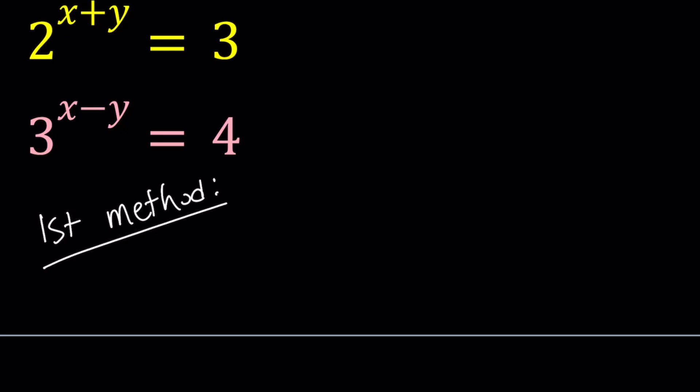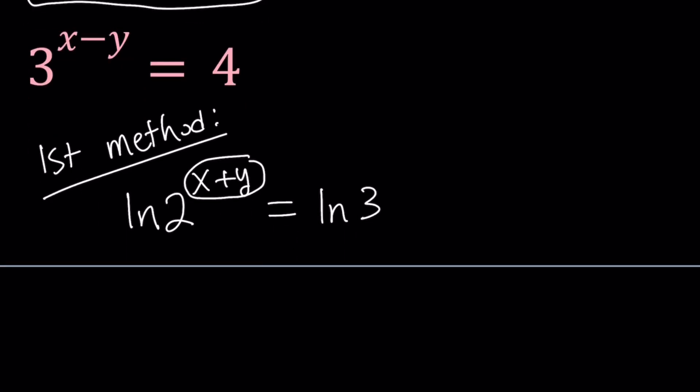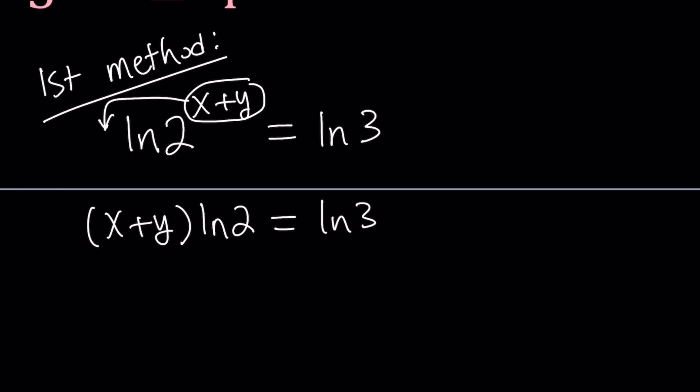For my first method, I'm going to do the following. I'll be taking the natural log of both sides in both of these equations. Let's start with the first one. ln 2 to the power x plus y equals ln 3. And then we're going to move the x plus y to the front using properties of logs. That gives us x plus y times ln 2 equals ln 3. And from here, we can find the value of x plus y as ln 3 over ln 2.